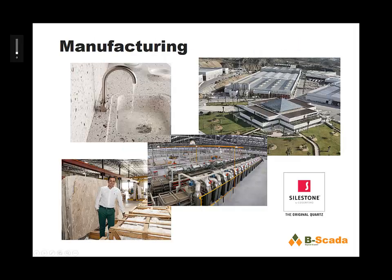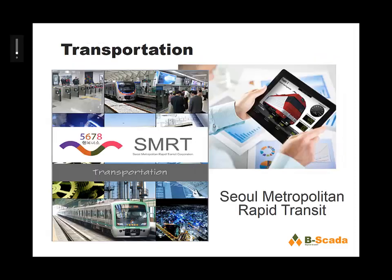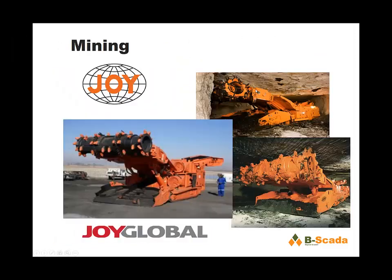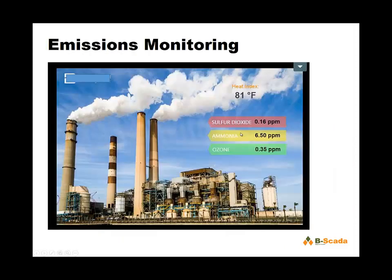Looking at Status Device Cloud and Status Enterprise, we have a number of different deployments, primarily within factory type settings but also in other vertical markets. If you're looking to buy granite countertops from your local hardware store, it's quite possible they were developed by Constantino and it's quite possible that this factory running Status Enterprise was used to build those. We have deployments within the Seoul metropolitan rapid transit system in Seoul, South Korea. We have deployments in mining, monitoring and controlling large pieces of equipment, and various other vertical markets including transportation, agriculture, petrochemical, as well as emissions monitoring.